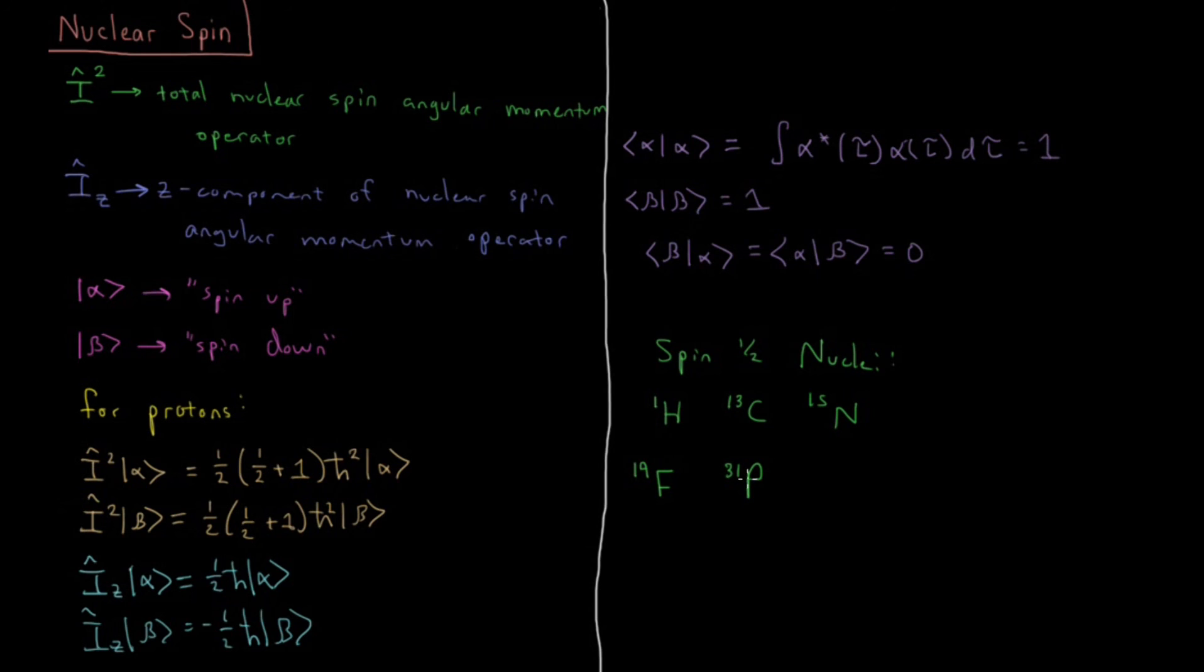You can also gather the spectrum on certain nuclei which have spin 1 and various other things, but these are the nuclei commonly used for determining the structure of organic molecules.